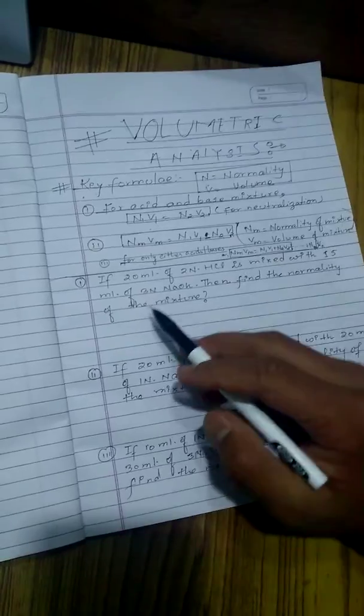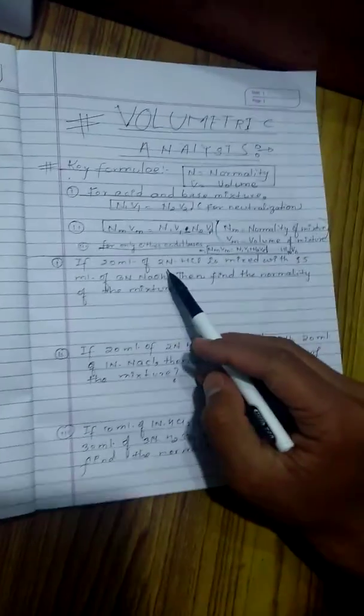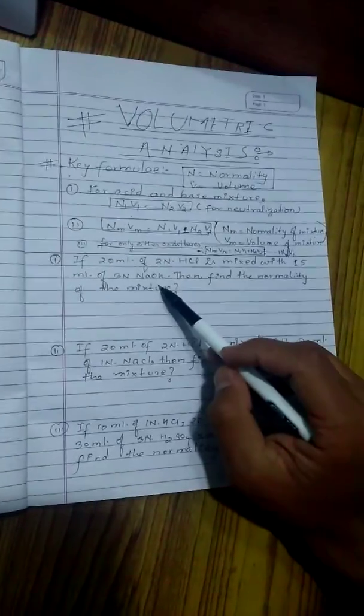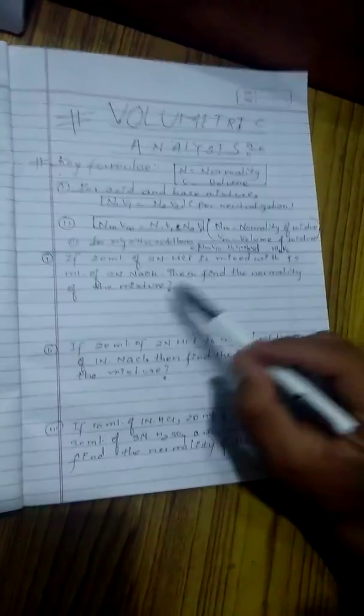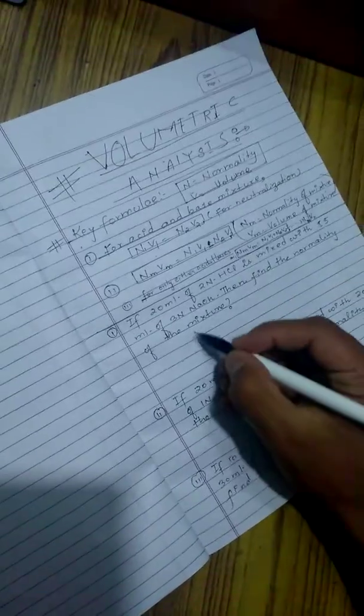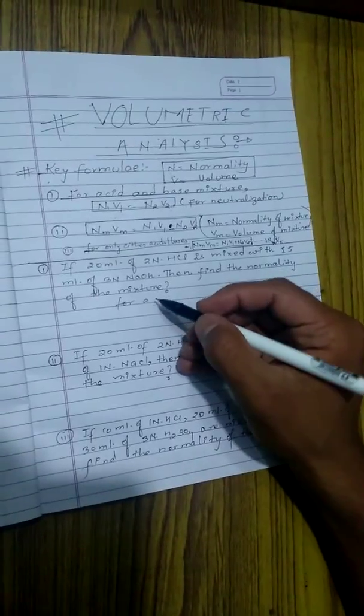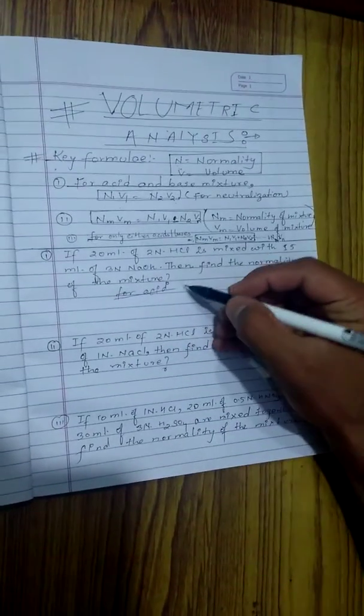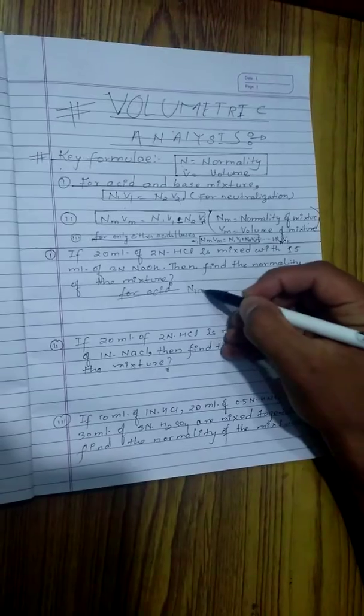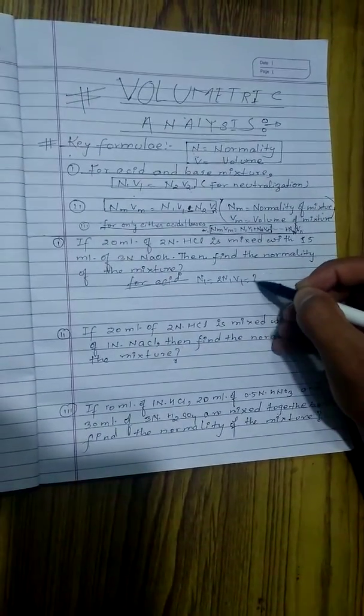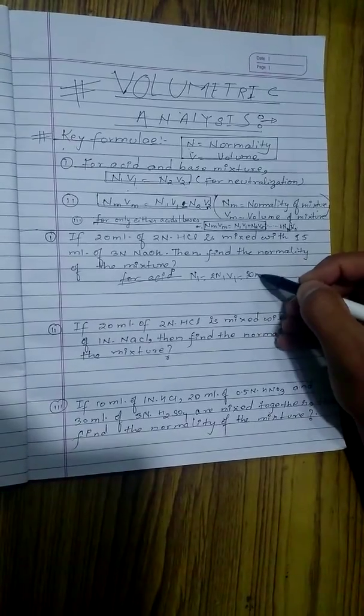Now let's discuss some problems. If 20 ml of 2N HCl is mixed with 15 ml of 3N NaOH, then find the normality of the mixture. Here for acid, look at here and take that N1 is equal to 2N and V1 is equal to 20 ml.